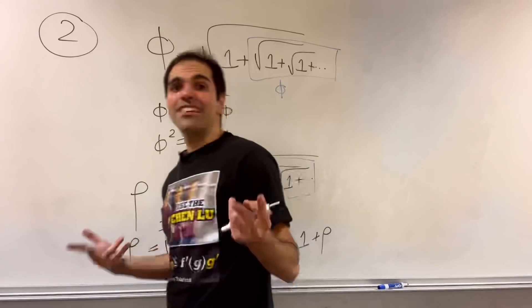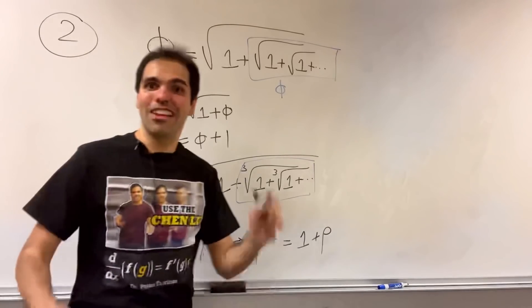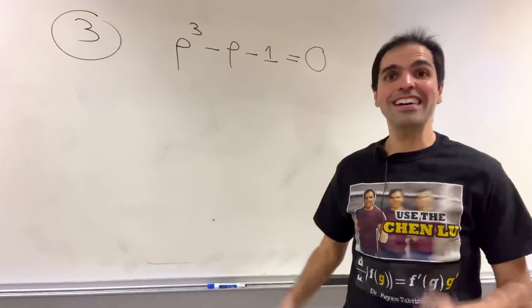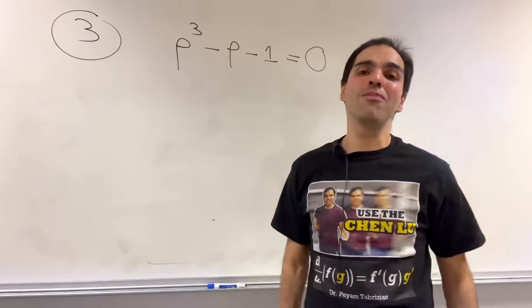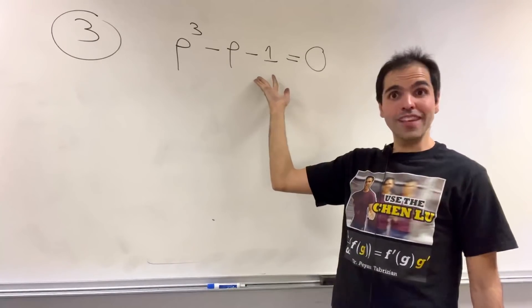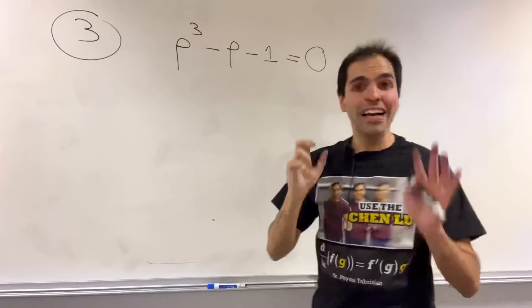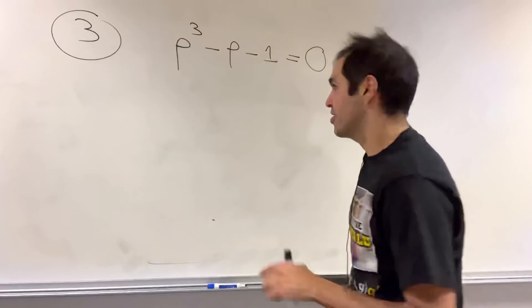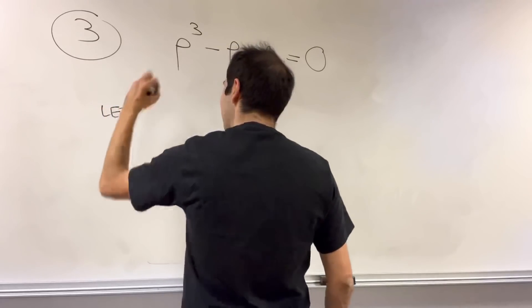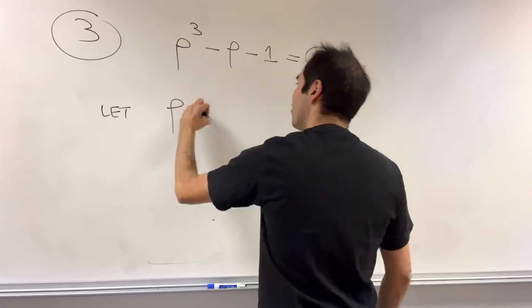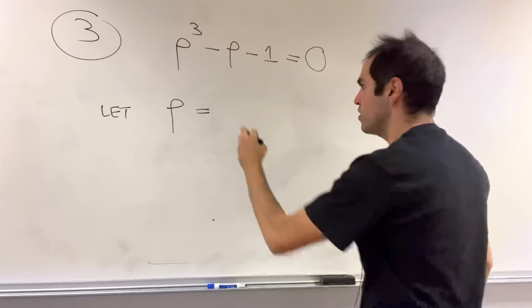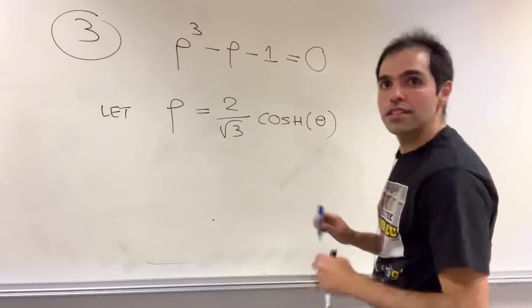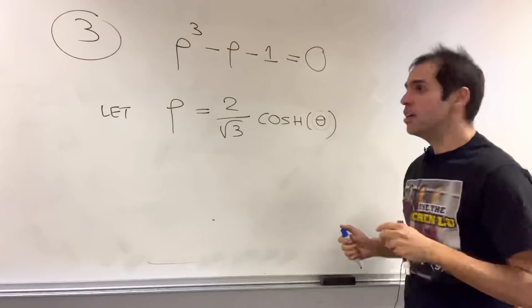And finally, I would like to mention there is an explicit formula of the plastic ratio in terms of trig. And yes, I did save the best for last, because it turns out you can write this explicitly in terms of hyperbolic trig functions. And how do you do that? Well, think inverse trig substitution. So define an angle theta implicitly via rho equals two over square root of three, cosh of theta. So again, this defines theta in terms of rho implicitly.